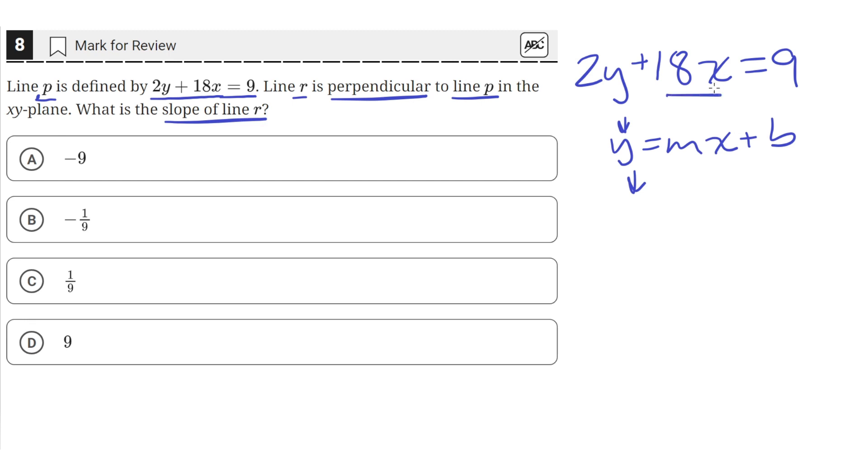Let's move the 18x to the other side by subtracting it from both sides. So we'll be left with 2y equals negative 18x plus 9.